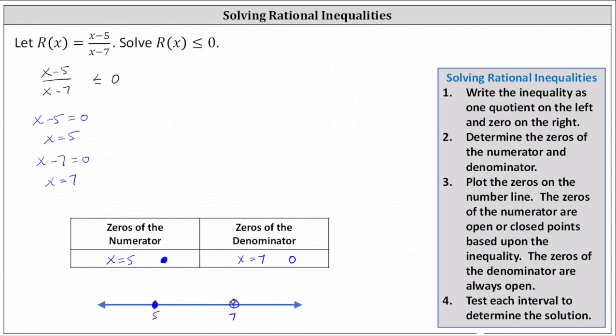The last step is to test the intervals we just created by selecting test values in each sub-interval and then substituting them into the inequality. If the test value is true, the entire interval is true and is part of the solution. If the test value is false, the entire interval is false and is not part of the solution. To the left of 5, let's use 0. Between 5 and 7, let's use 6. To the right of 7, let's use 8.